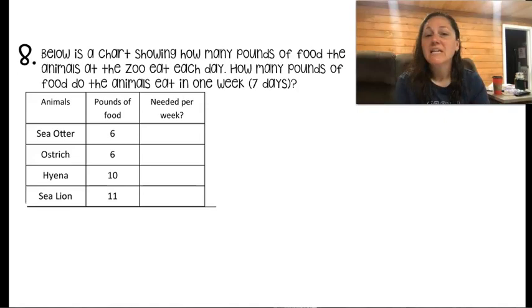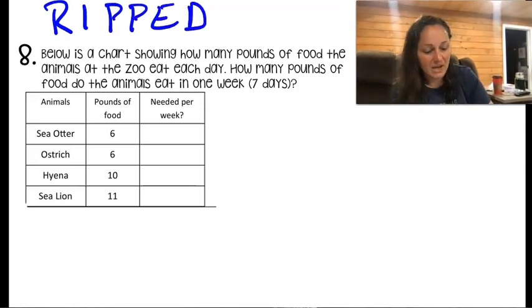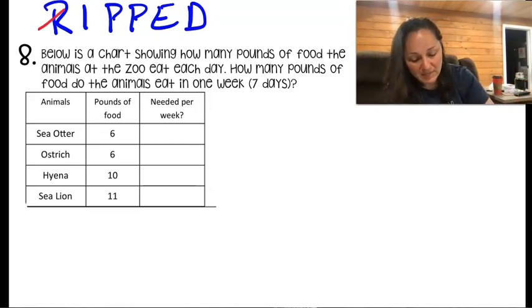So let's check out our problem for today. It says below is a chart showing how many pounds of food the animals at the zoo eat each day. How many pounds of food do the animals eat in one week, so seven days. First off let's get our ripped up top. We have already read the problem, so we're going to cross that off.